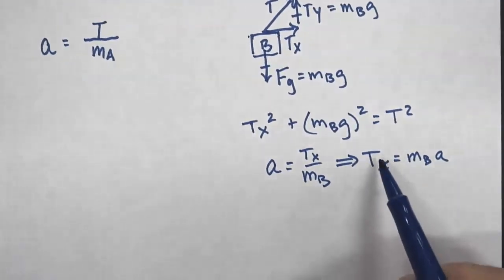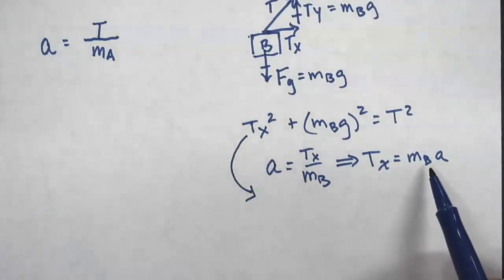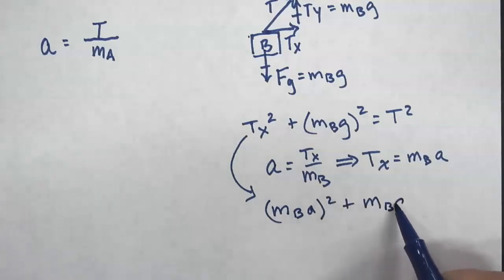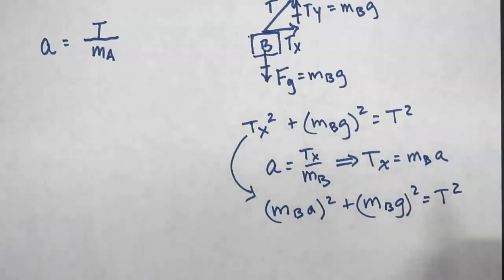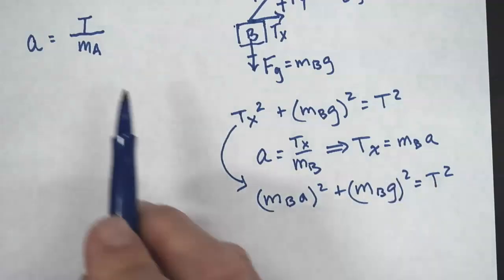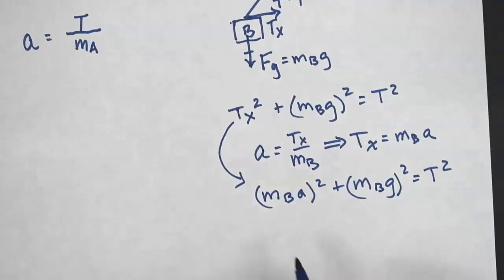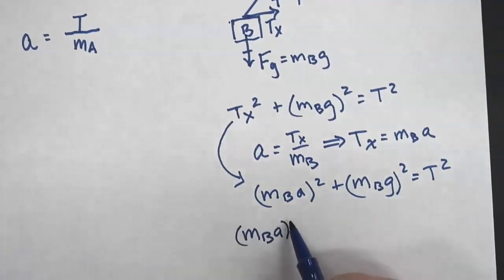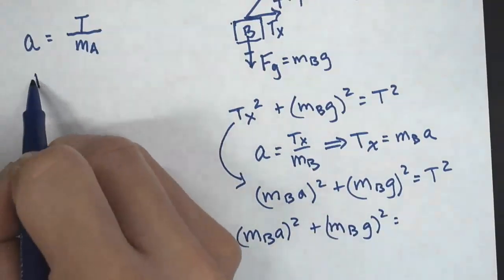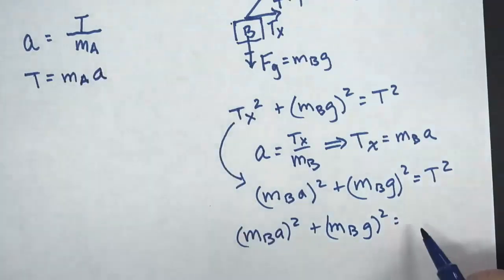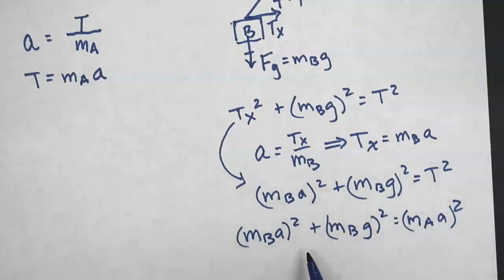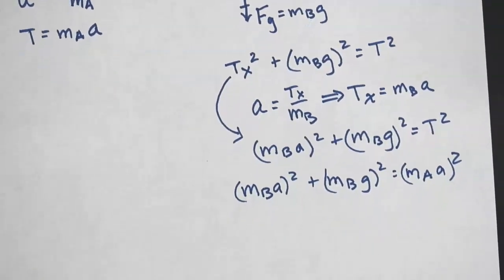I notice there is a triangle formed by Tx, Ty, and T, so I apply the Pythagorean theorem: Tx² + Ty² = T². I substitute Tx = M_B·A and Ty = M_B·G, giving (M_B·A)² + (M_B·G)² = T². I also substitute T = M_A·A from the box A equation, so the result becomes (M_B·A)² + (M_B·G)² = (M_A·A)².